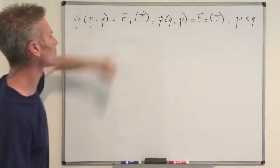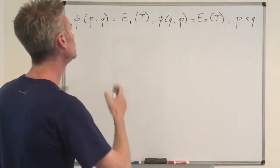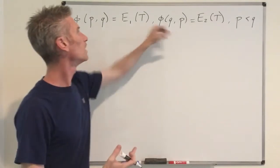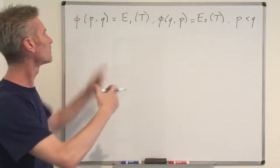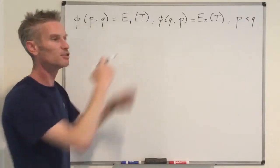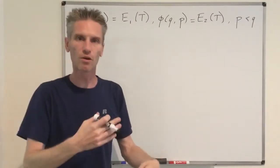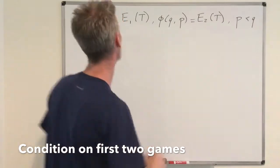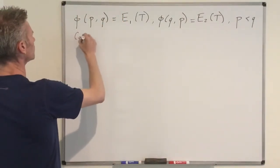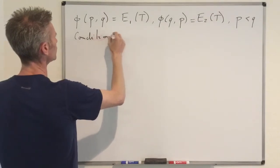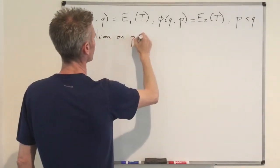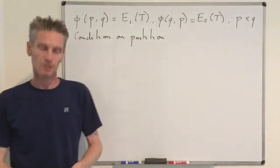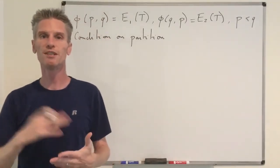To compute φ(P,Q), a natural way is to use conditioning. Because she's going to play with opponent 1, then 2, then back to 1, it looks natural to use a restart argument and condition on the outcomes of the first two games. So I'm going to condition on a partition. There are four possible outcomes for the first two games: win-win, win-lose, lose-win, or lose-lose.